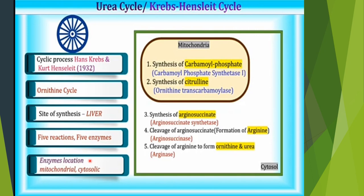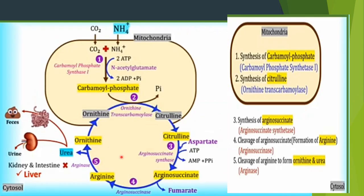Regarding enzyme location, two enzymes are present in the mitochondria while the remaining three enzymes are present in the cytosol. Now let's begin the urea cycle in detail.